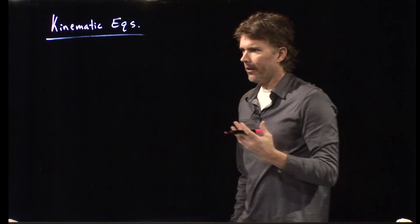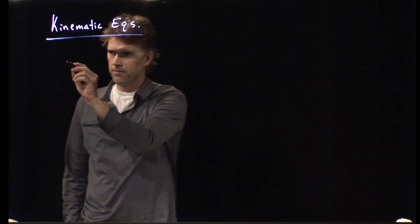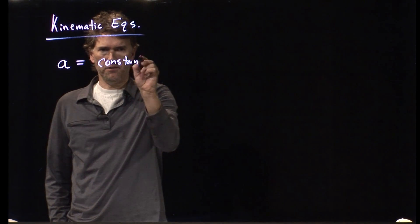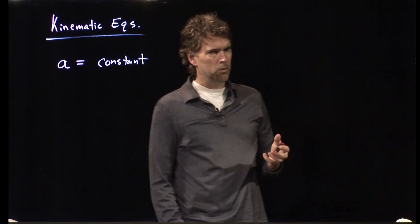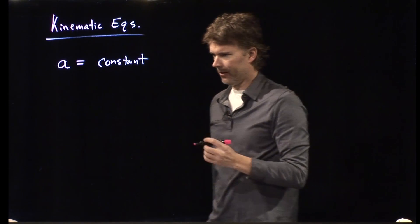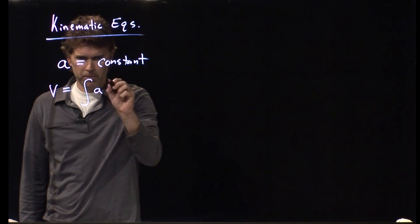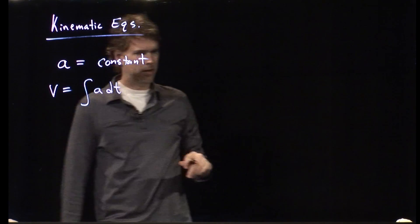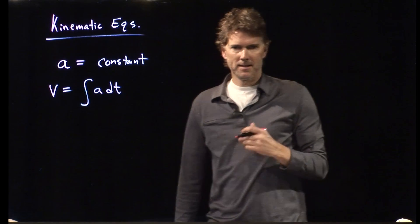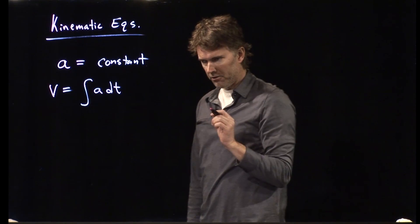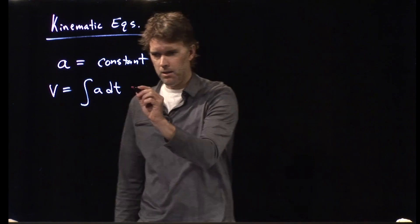So, if we start with an acceleration, and we say that that acceleration is constant, how do we get to velocity? Well, velocity turns out to just be the integral of acceleration with respect to time. And if A is in fact a constant, it comes out of the integral.